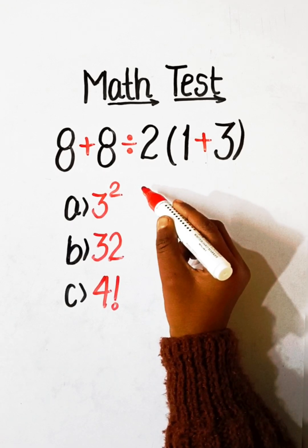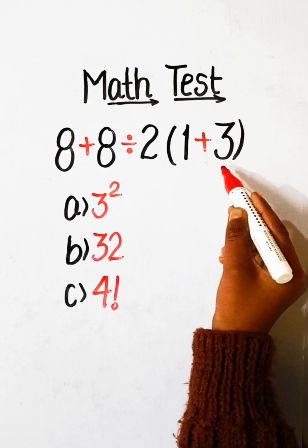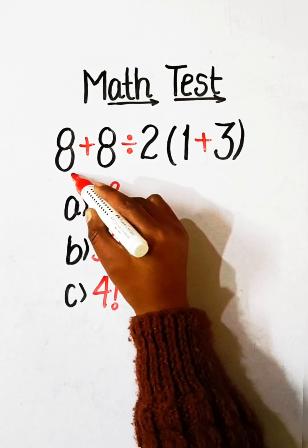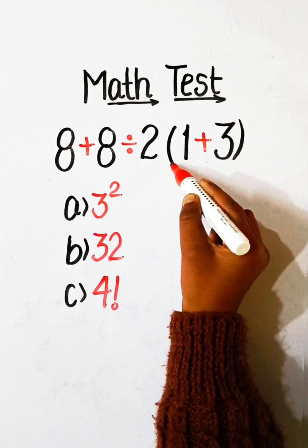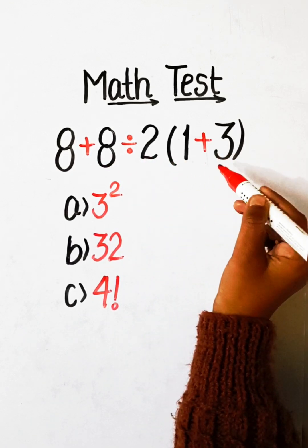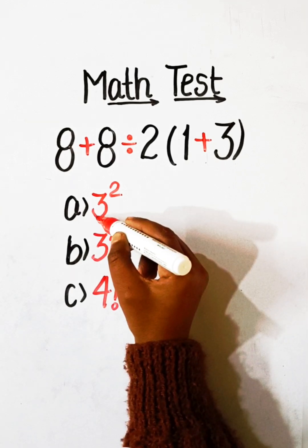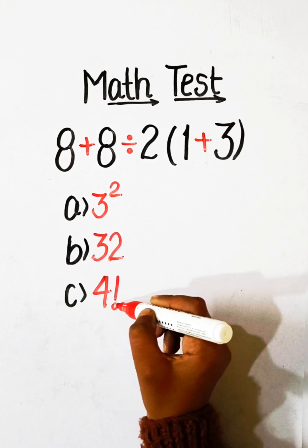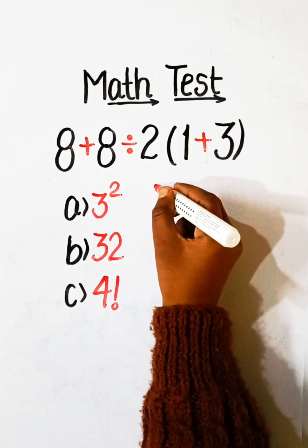Hello everyone, welcome back to my YouTube channel. In this video we will solve this simplification question: 8 plus 8 divided by 2, under bracket 1 plus 3, equals to what? Option A: 3 squared, Option B: 32, Option C: 4 factorial. So let's solve this.